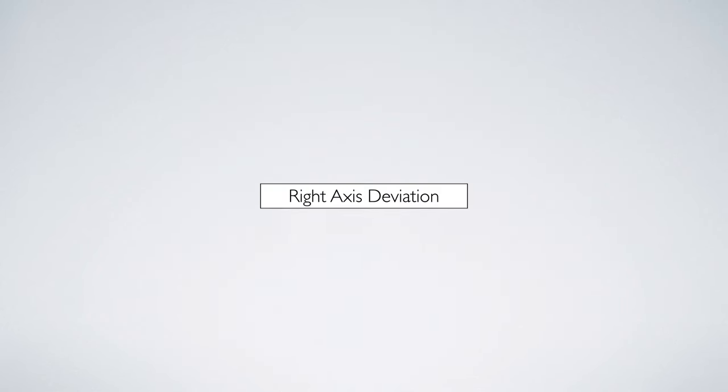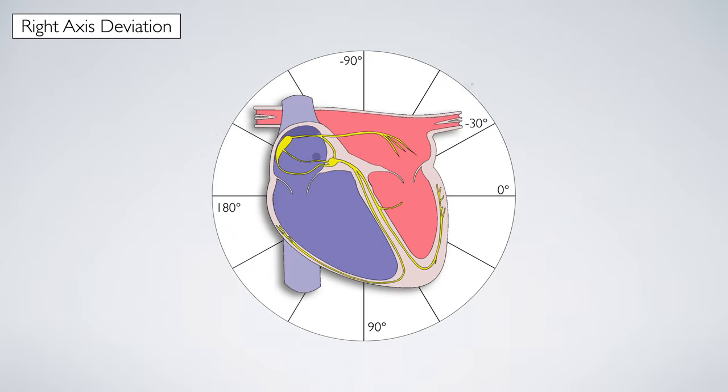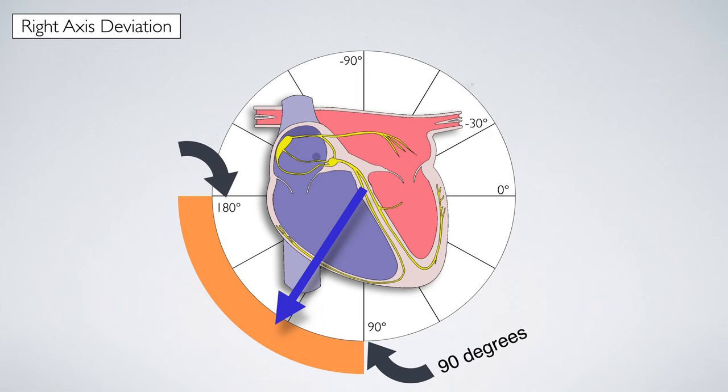Let's take a look. We'll start with right axis deviation. Right axis deviation occurs when the main vector of electrical activity moves towards the right ventricle. The axis falls between 90 and 180 degrees.